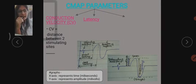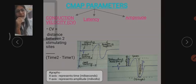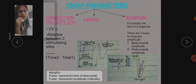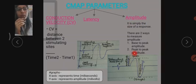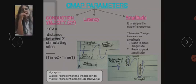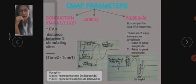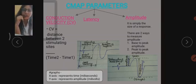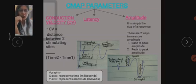The next parameter is amplitude. Amplitude is simply the size of a response — how high, or what is the size of the response we get. These responses are seen on a monitoring screen connected to the electrodes, which shows graphs that we have to infer from the results. There are two ways to measure the amplitude: from baseline to peak, or peak to peak amplitude.